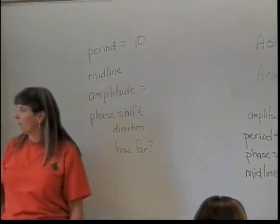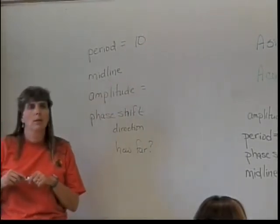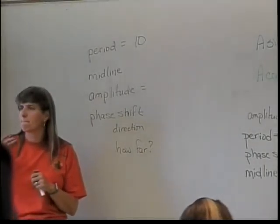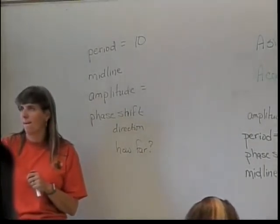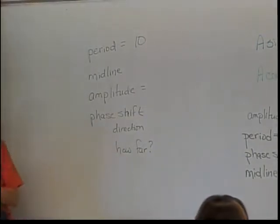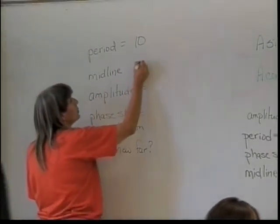What's the midline for the graph? Why do you think it's y equals 0? Right. It's highest point is at 2. It's lowest point is at negative 2. Halfway between the two is still y equals 0.